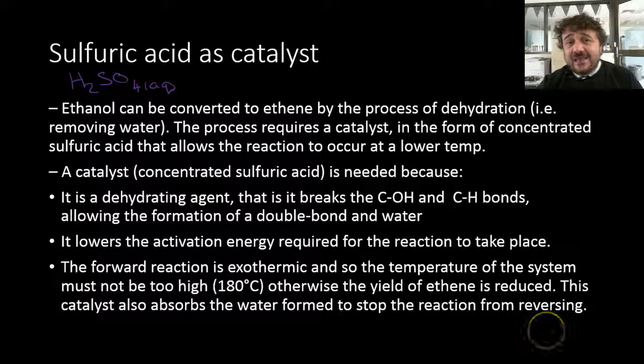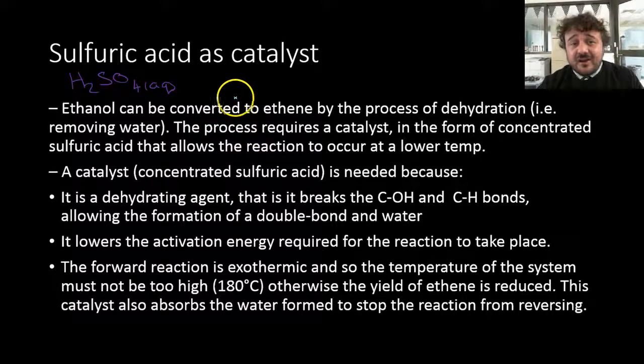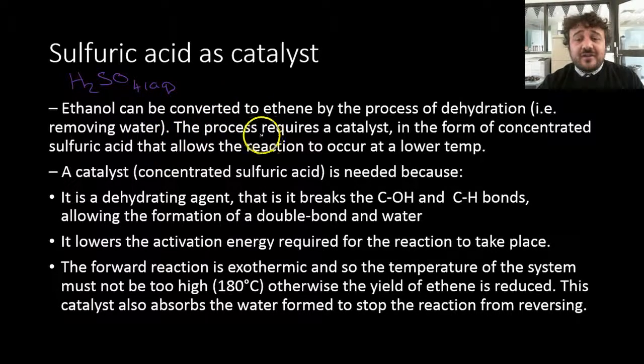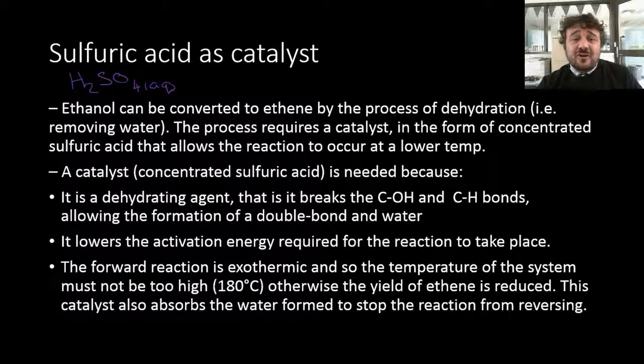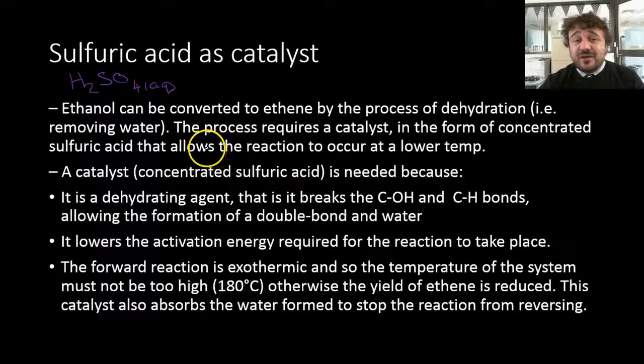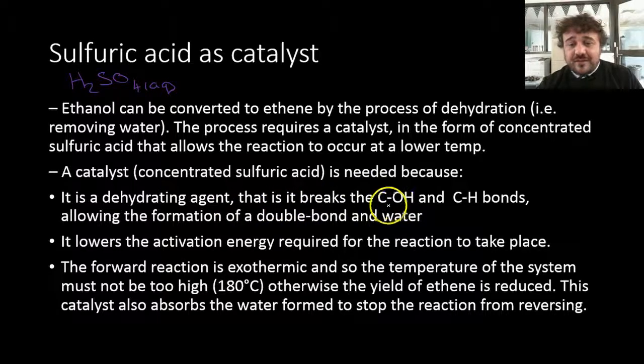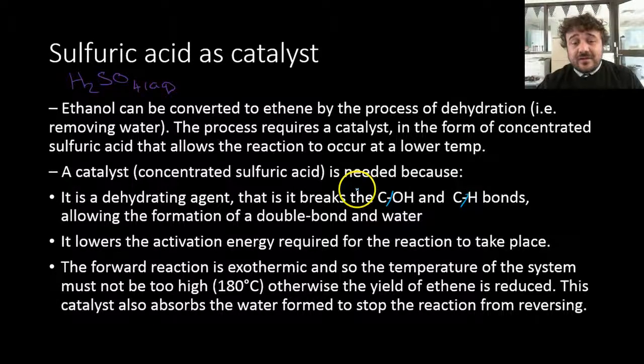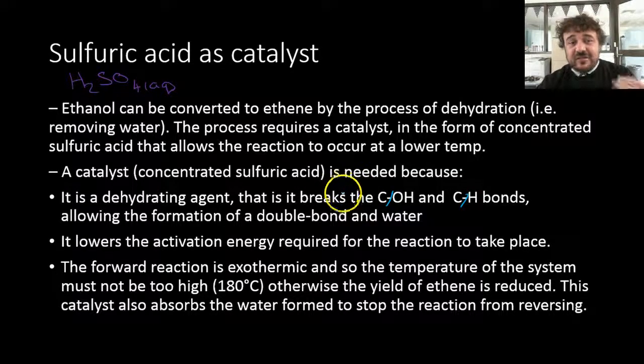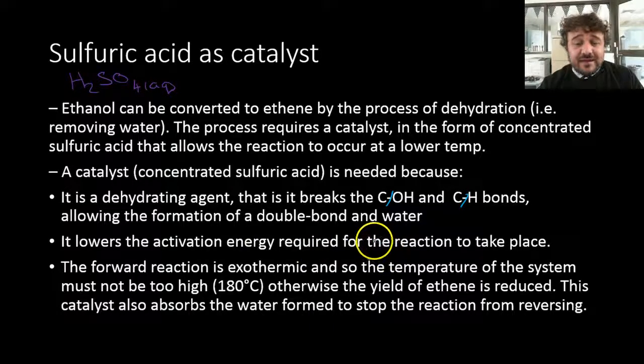All right. Now, sulfuric acid is the catalyst. We want to talk about why it's the catalyst though. So ethanol can be converted to ethylene by the process of dehydration. This just means removing water. This process requires a catalyst to lower the activation energy. So it allows it to occur at a low temperature. It's needed because of this. It's a dehydrating agent, which means it breaks that bond and that bond. It allows the double bond to form, but also water. That's why it's dehydrating, takes the water away. It lowers the activation energy for the reaction to take place.